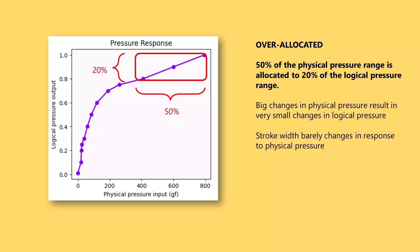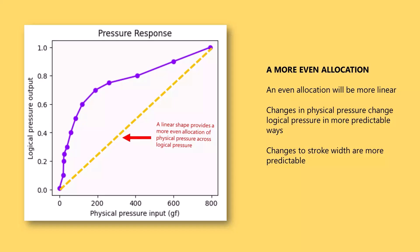At the other end of the pressure response, we see a different kind of problem. Here, 50% of the physical pressure range is allocated to only about 20% of the logical pressure range — we are over-allocating physical pressure range in this section. Big changes in physical pressure produce small changes in logical pressure and small changes in stroke width. It can feel like you're pressing very hard but barely changing the width of the stroke. As a starting point, maybe it would be better to allocate physical pressure range more evenly across the logical pressure range, resulting in a pressure response that looks more like a straight line, giving more consistent and predictable pressure behavior.